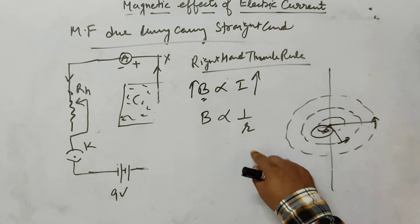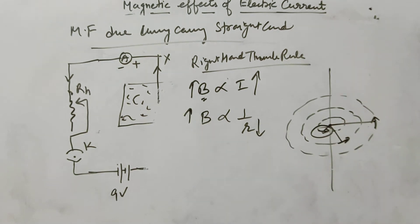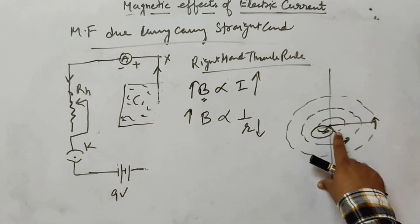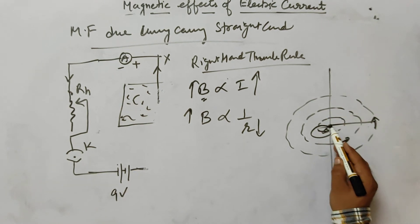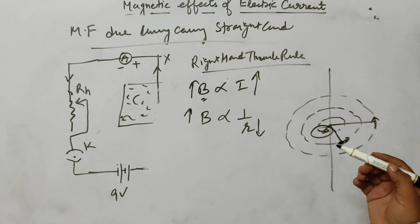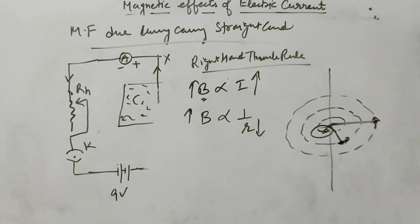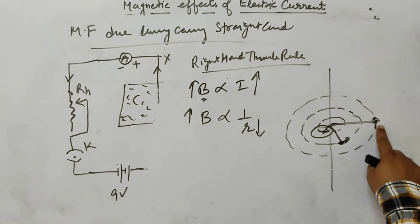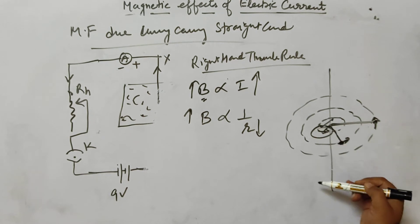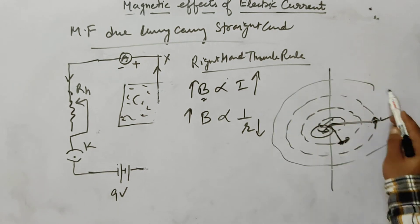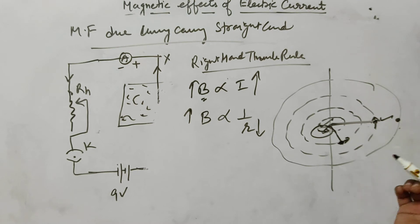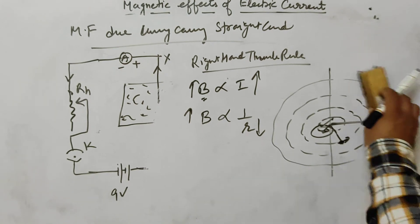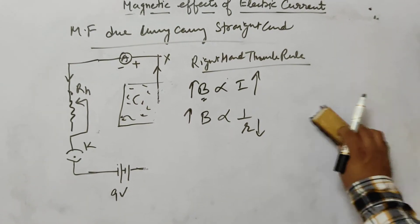If you place a compass closer to the conductor, it gives the most deflection — the magnetic field is strongest near the center. As we move further away from the conductor, the magnetic field becomes weaker. The most deflection (strongest field) is nearest to the conductor; as distance increases, the magnetic field decreases.